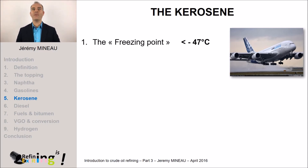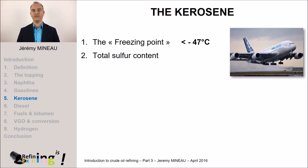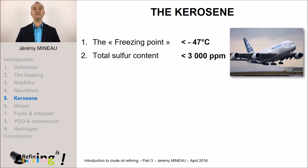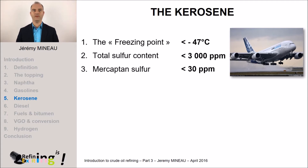The second main property is the content in sulfur. For environmental reasons, the international standards impose the sulfur content not to exceed 3000 ppm. Furthermore, regulations also impose the mercaptan sulfur to be below 30 ppm. This is to prevent the kerosene from having a very bad smell.